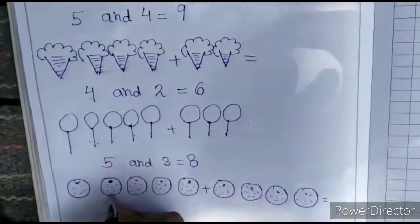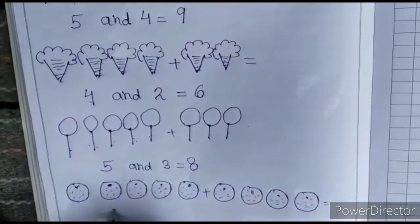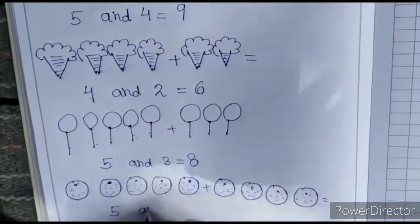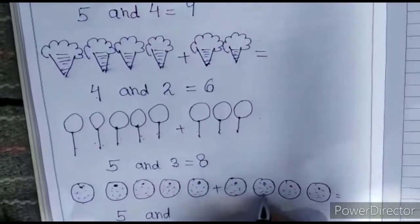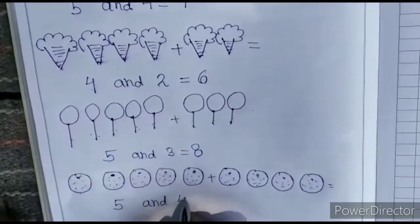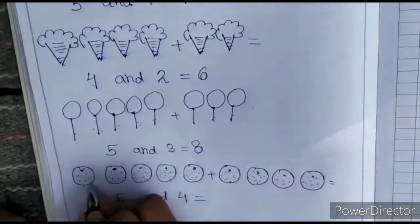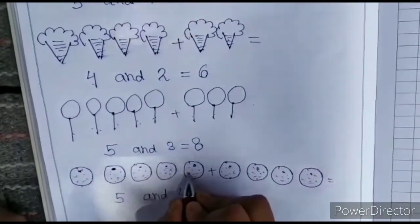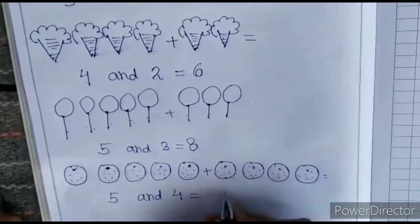1, 2, 3, 4, 5. 5 orange. 1, 2, 3, 4, 5, 6, 7, 8, 9.